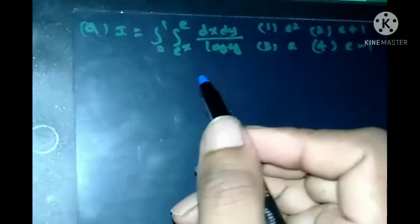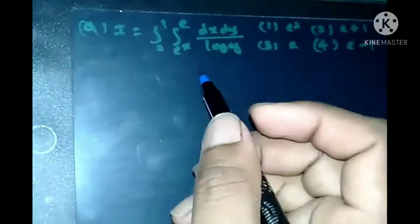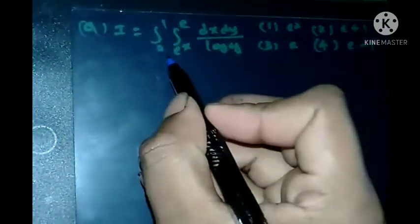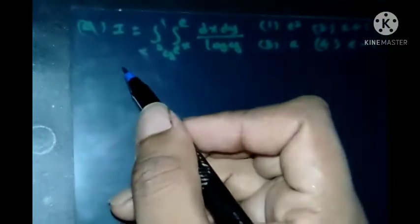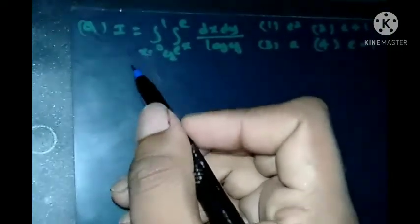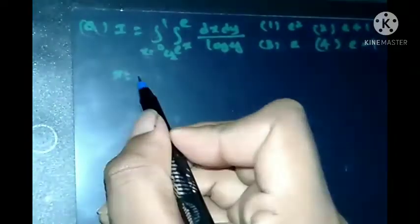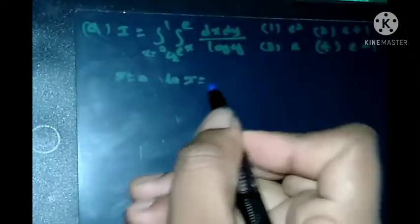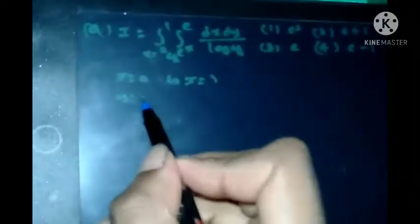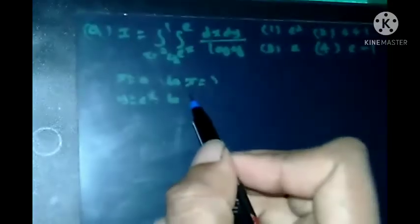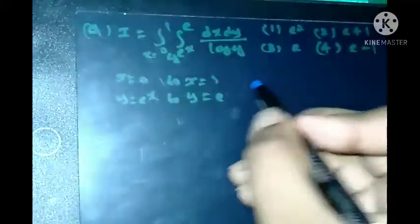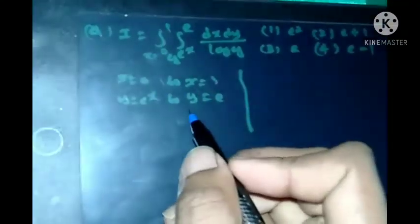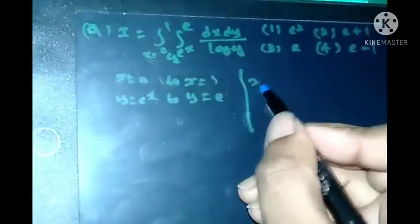See this problem asked in BHU 2018. They given y limits and x limits. First step is write down the limits they given. First of all, write down that limits: x is equal to 0 to x equal to 1, and y is equal to e^x to y is equal to e.